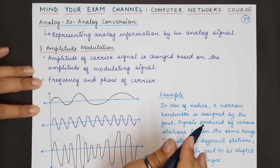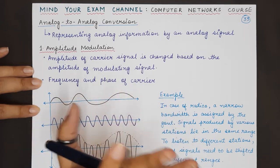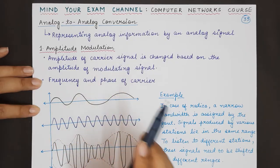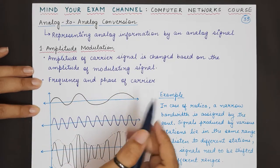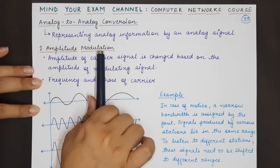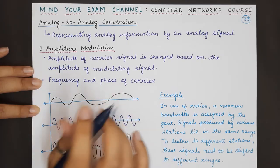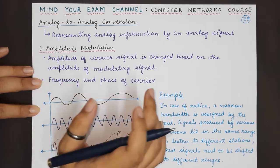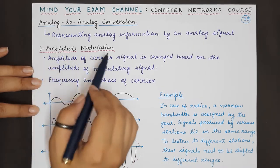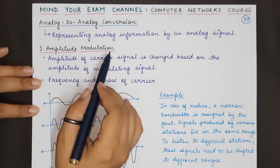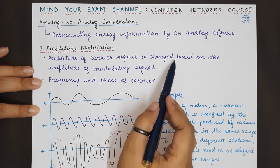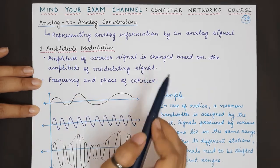And how is it done? It is done using one of three techniques known as modulation. Depending upon the characteristic of the signal that we are changing, the analog to analog conversion can either be amplitude modulation, frequency modulation, or phase modulation. We will be studying all these today, starting with amplitude modulation. In amplitude modulation, the amplitude of the carrier signal is changed depending upon the amplitude of the modulating signal.